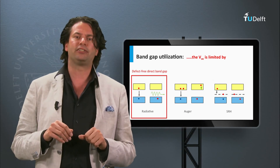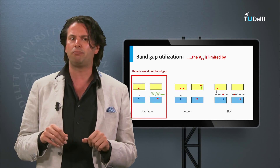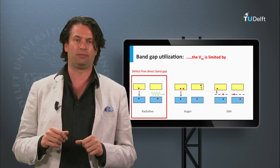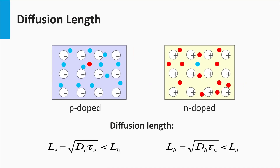Next to the bandgap utilization, I would like to discuss the relation between the maximum thickness of the absorber layer of a solar cell and the recombination mechanism. The recombination mechanism also affects the diffusion length of the minority charge carrier. The diffusion length is given by the equation L = √(D·τ), where D is the diffusion coefficient and τ is the lifetime of the minority charge carrier. This leads to one additional limitation: the absorber layer of a solar cell cannot be thicker than the typical diffusion length.